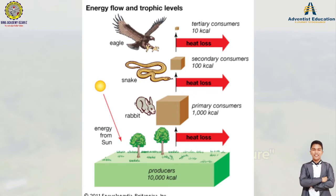The snake, containing 100 kilocalories, is then consumed by an eagle. The eagle is now the tertiary consumer and receives only 10 percent of the energy from the snake. So instead of 100 kilocalories, the eagle receives only 10 kilocalories. Now, what if the eagle eats a plant directly? Then the eagle would receive 10 percent from the producers, giving the eagle 1,000 kilocalories as a primary consumer.